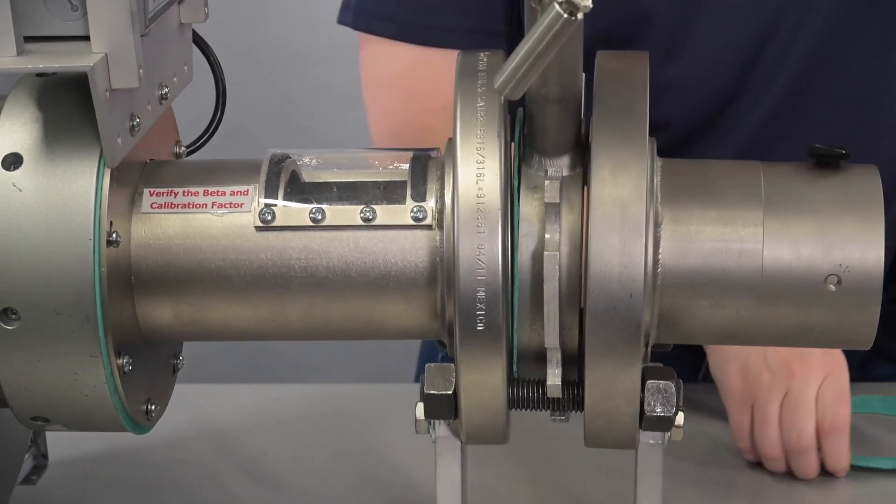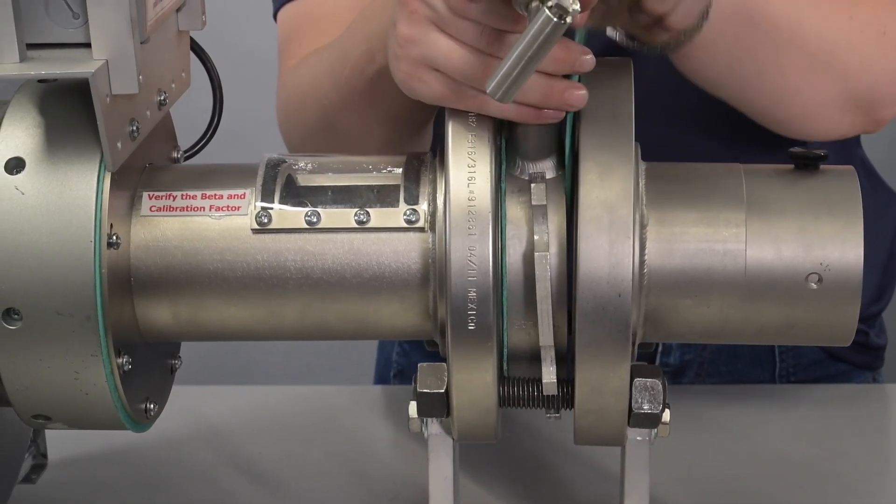Once the unit is in place, you can insert the two gaskets between the flange and the 405.